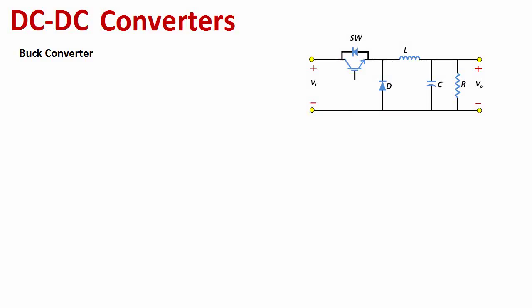Welcome folks. Today we're going to discuss a very important circuit in power electronics called the DC-DC buck converter. The DC-DC buck converter is the simplest circuit that we study in power electronics, yet it is very important as a fundamental circuit. If we understand this circuit, we can understand almost any power electronic circuit.